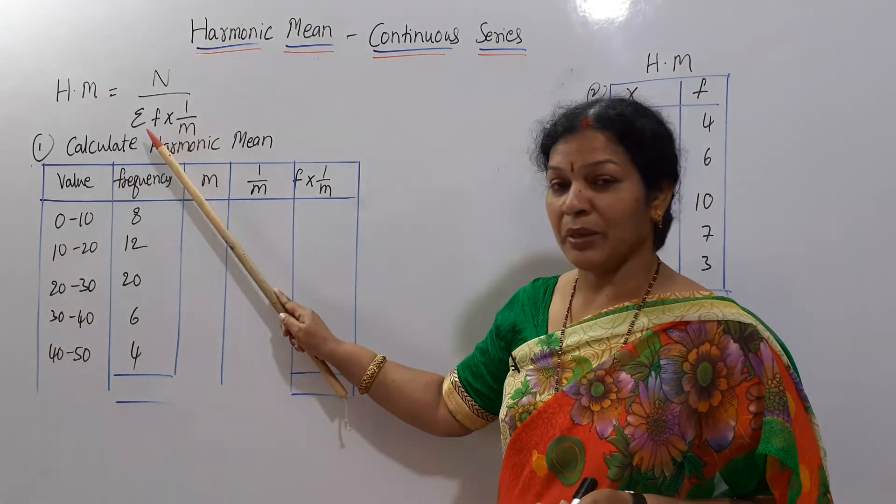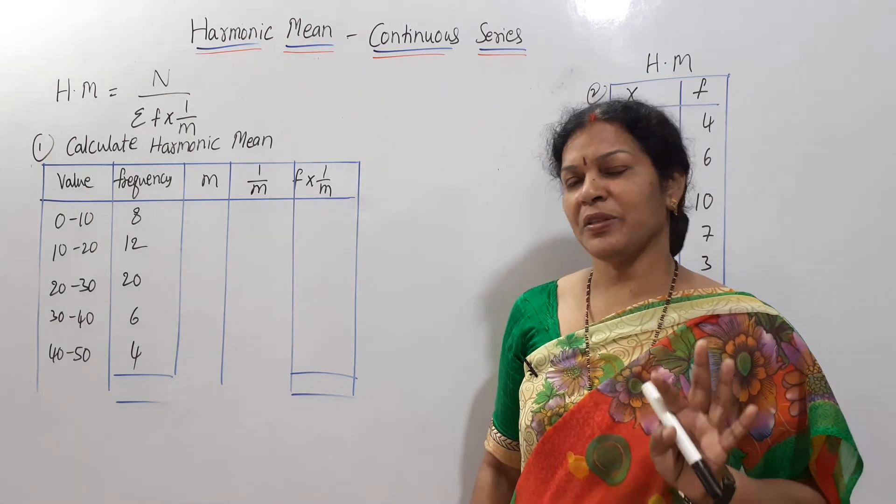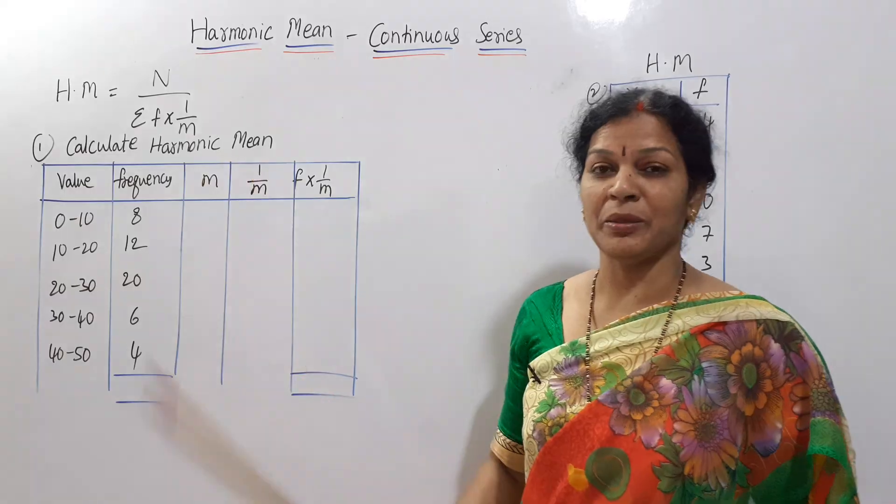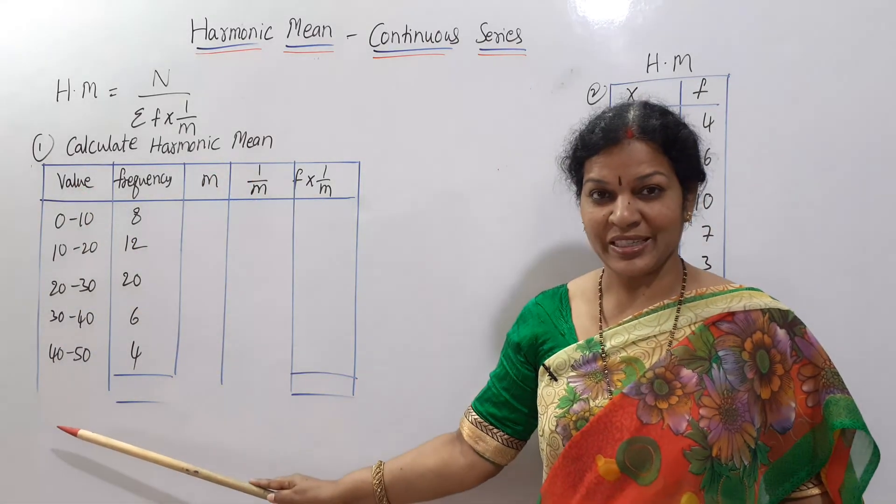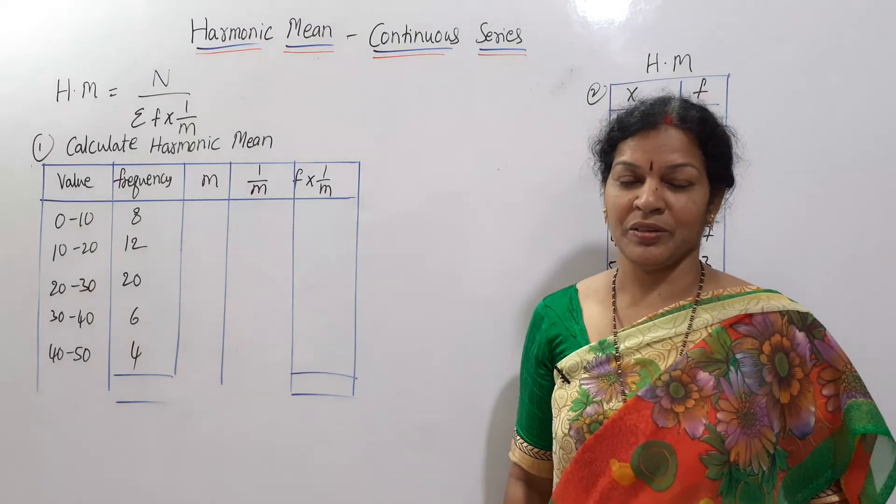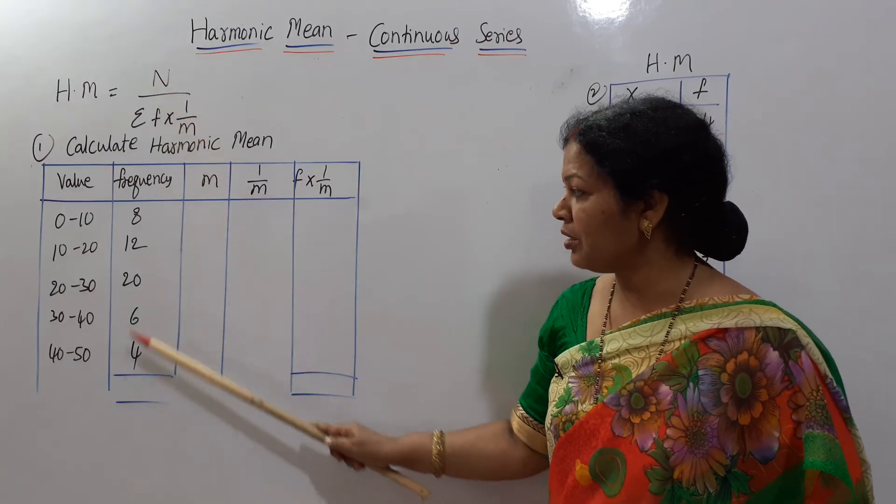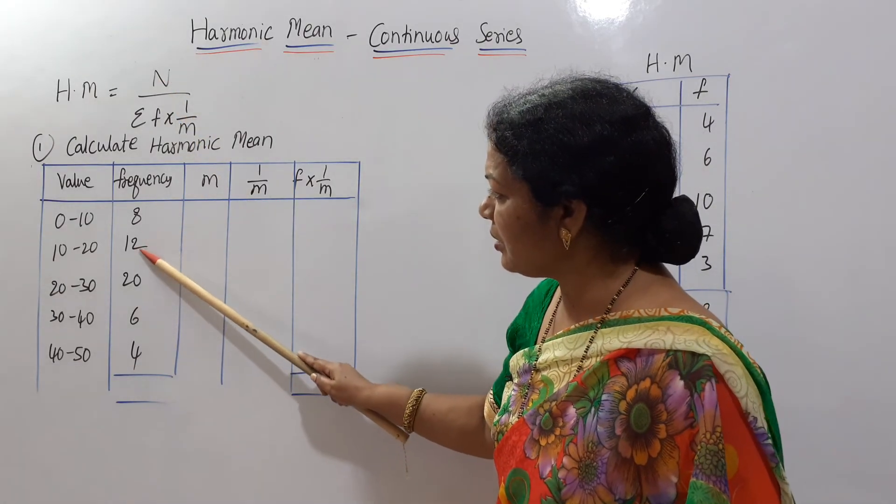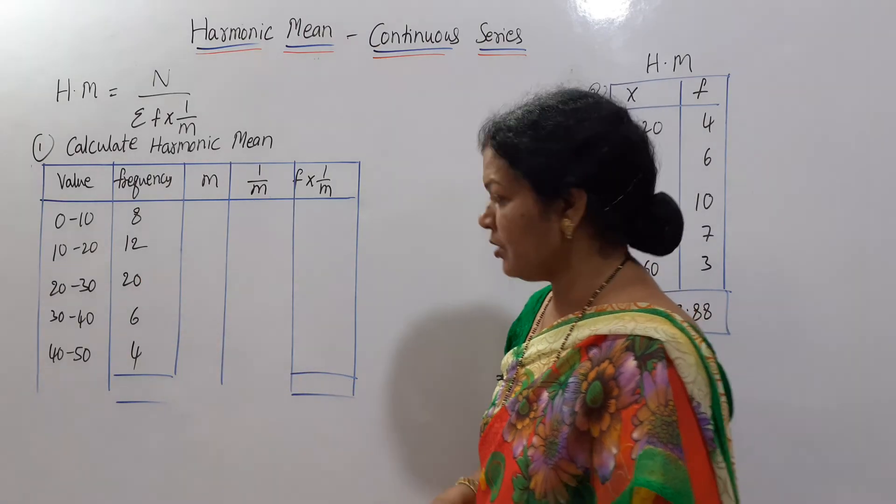Say along with me: the formula harmonic mean equals N by sigma F into 1 by M. Now as per this formula, we need to calculate the harmonic mean for continuous series. Value X is given in class interval and frequency is also given. What we need as per the formula? N we need, N means total. What is this total? We'll see: 8, 12, 20, 6, 4. So N is here 50.